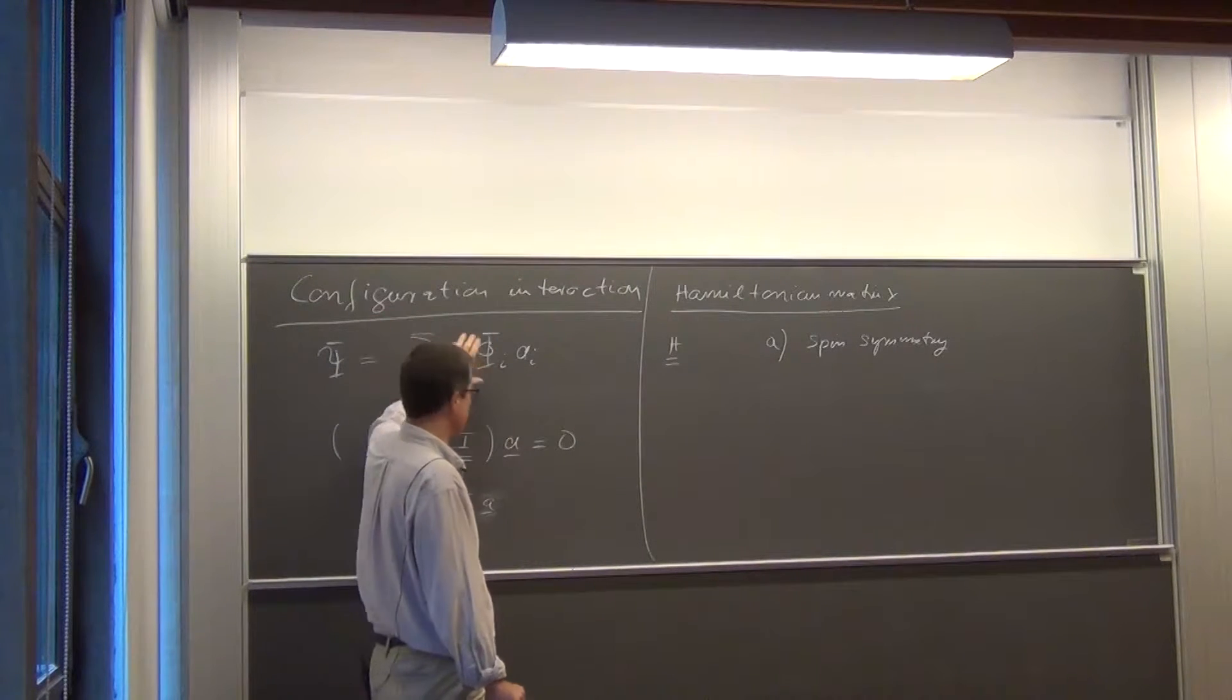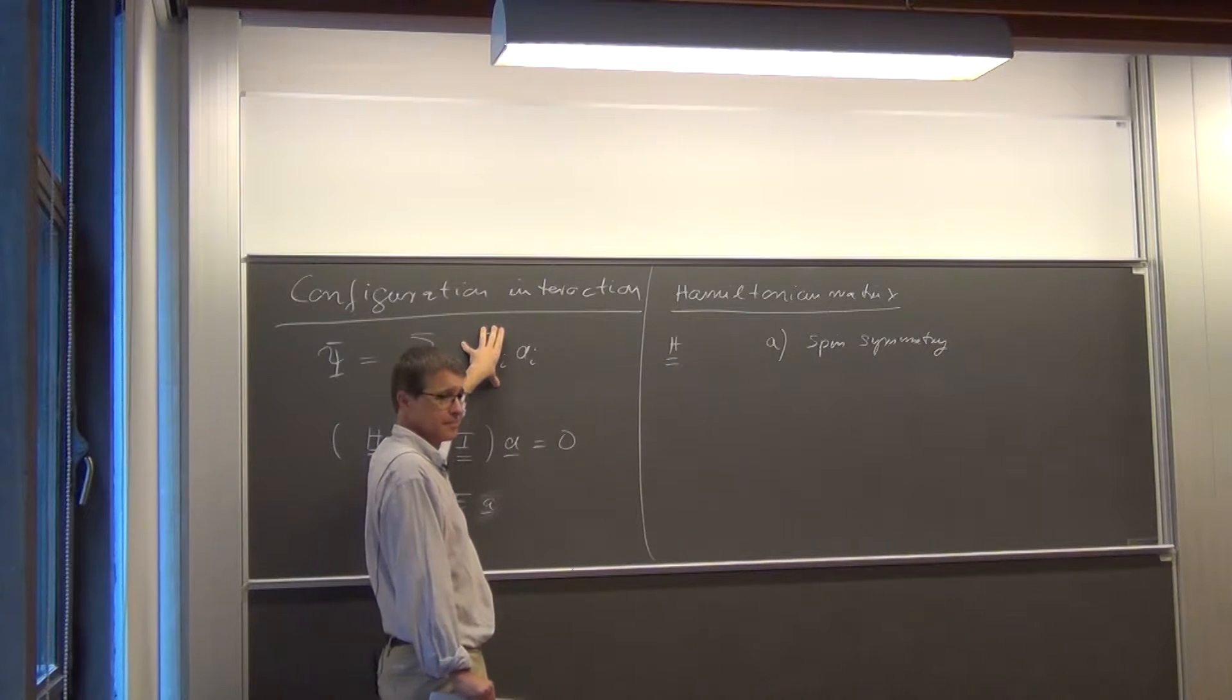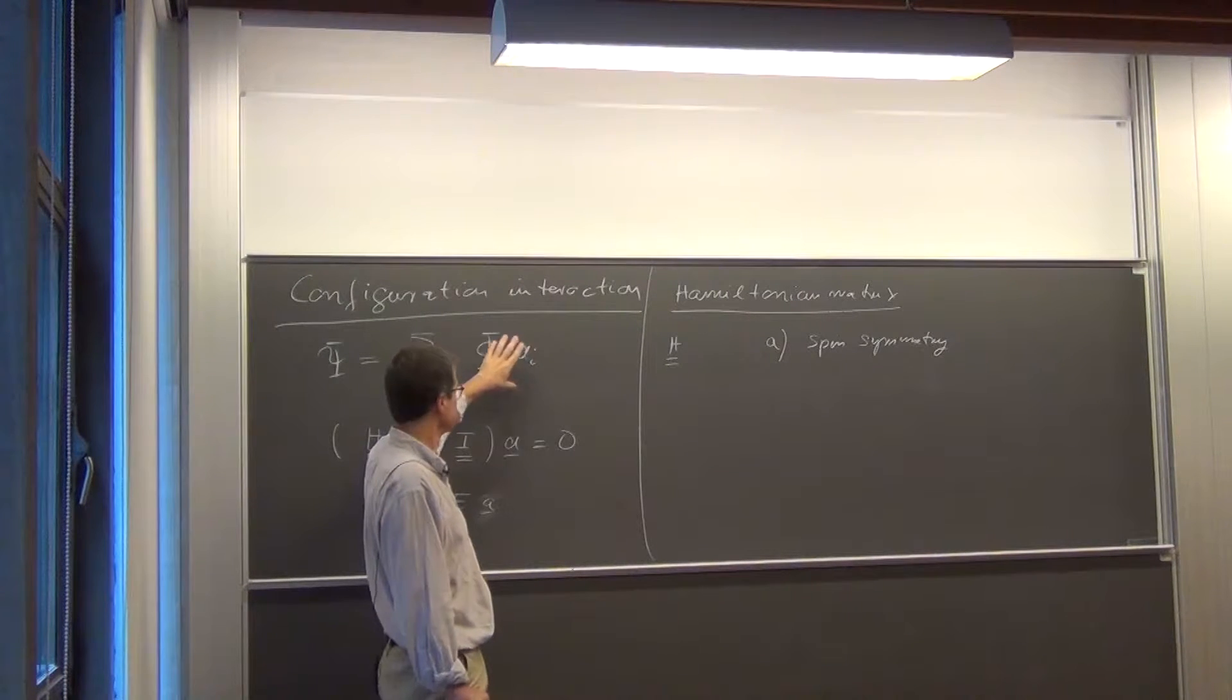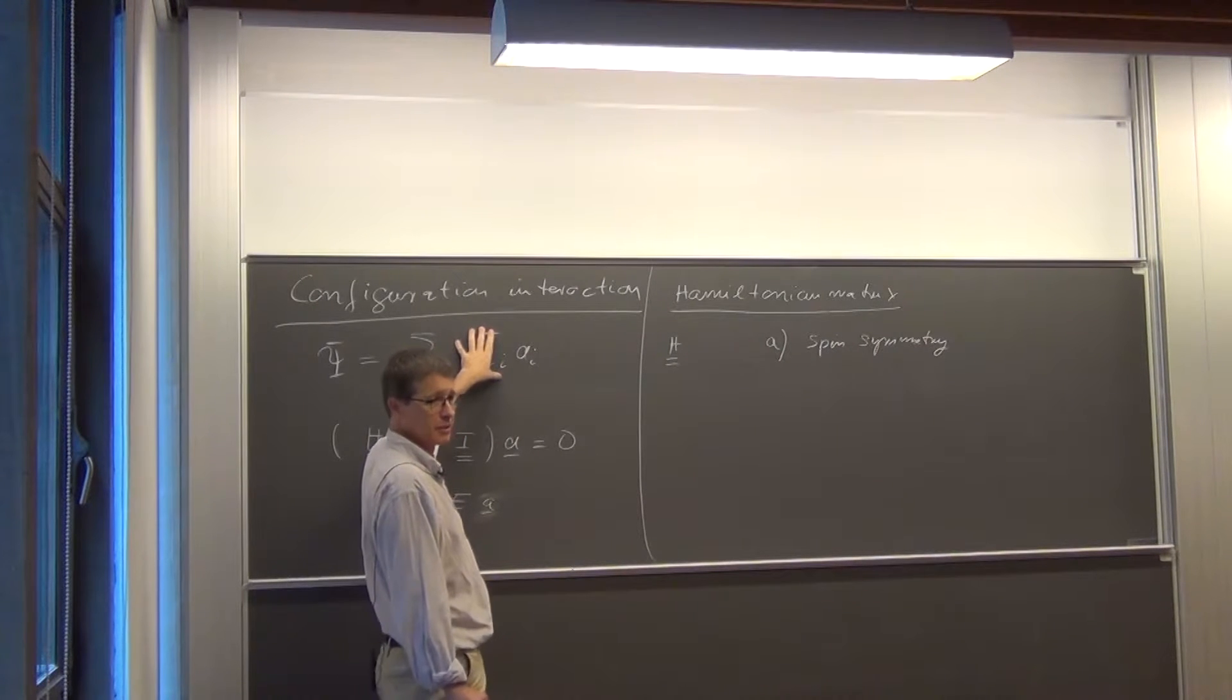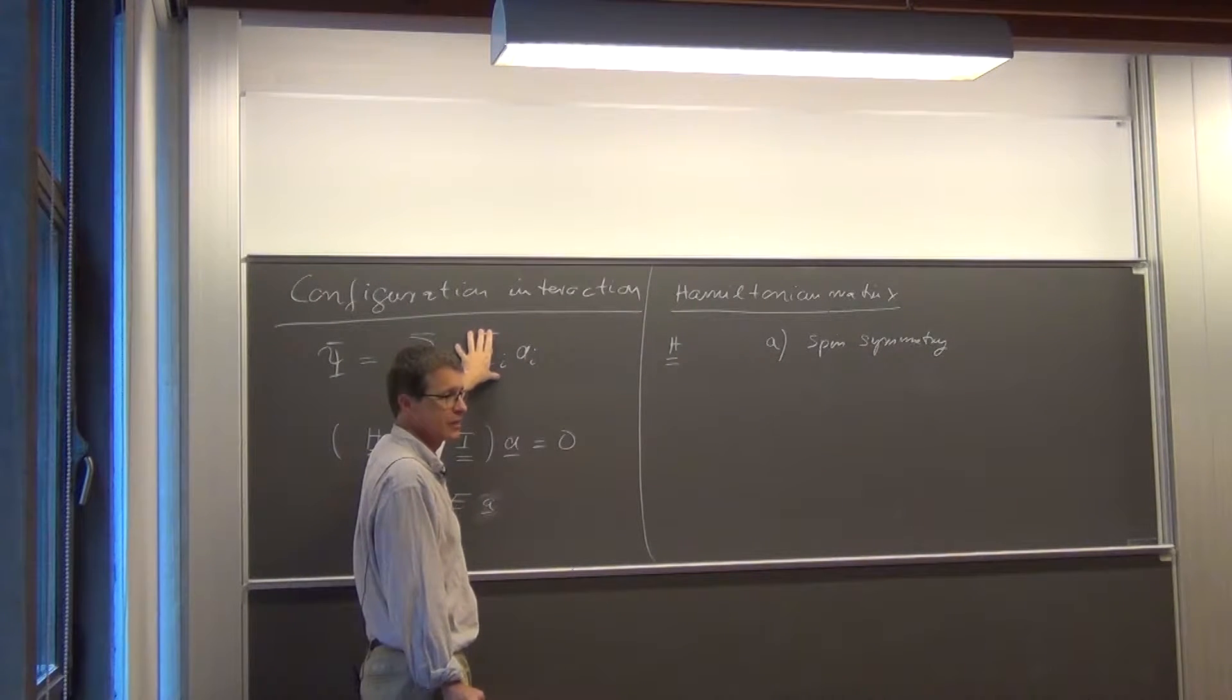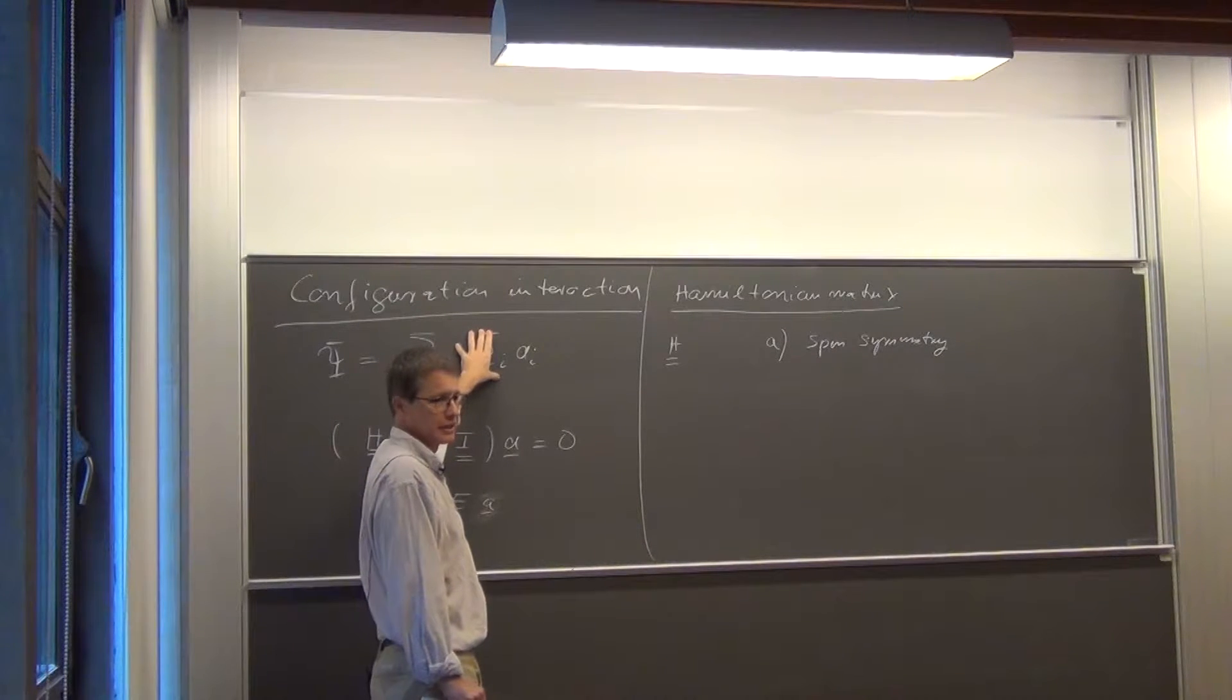determinants which have S equals to zero and MS equals to zero. If it's a doublet, we only want to have determinants which have S equal to one half. And that means, we have to make sure that the determinants we use here are eigenfunctions of not only the z component of the spin operator, but they also should be eigenfunctions of S squared.